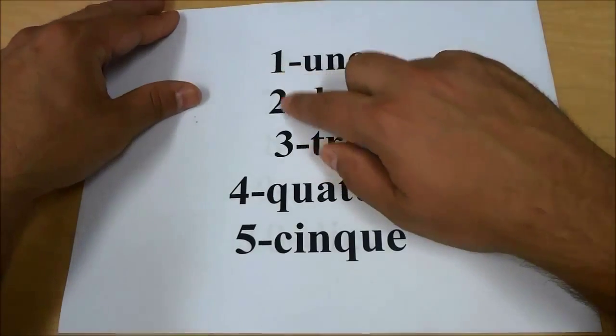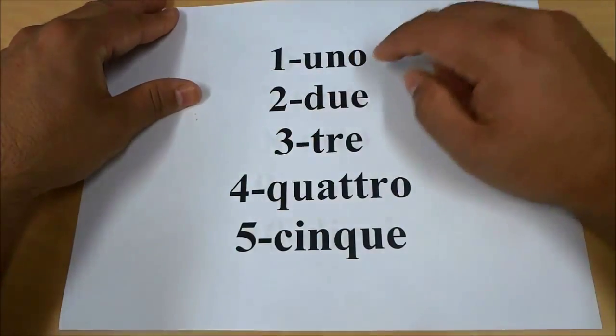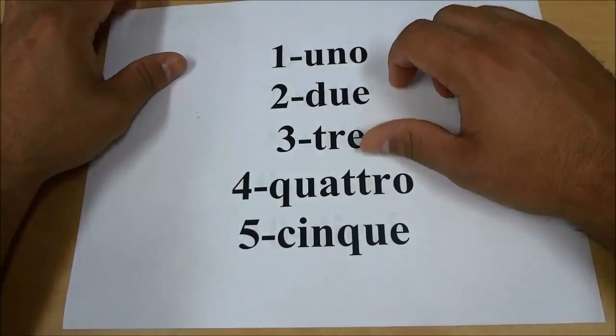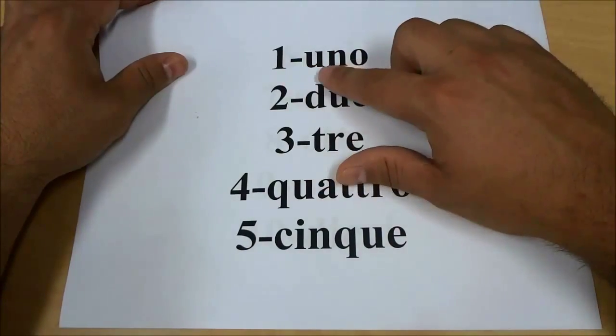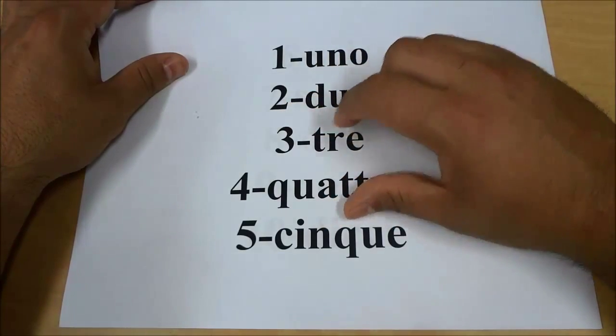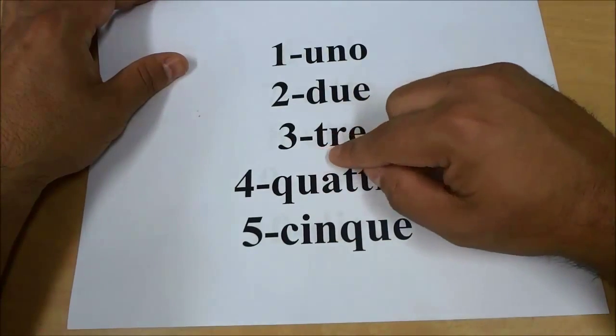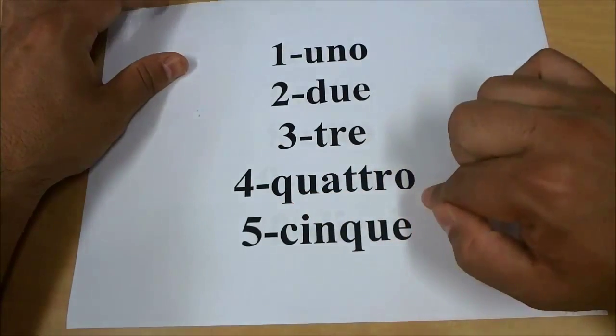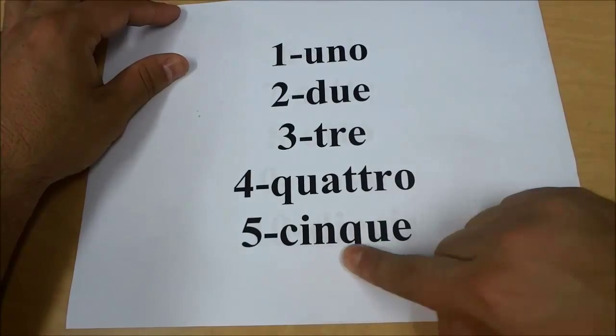What I have here is the number written down on the piece of paper and the Italian word written beside the number. So 1 is uno, 2 is due, 3 is tre, 4 is quattro, 5 is cinque,